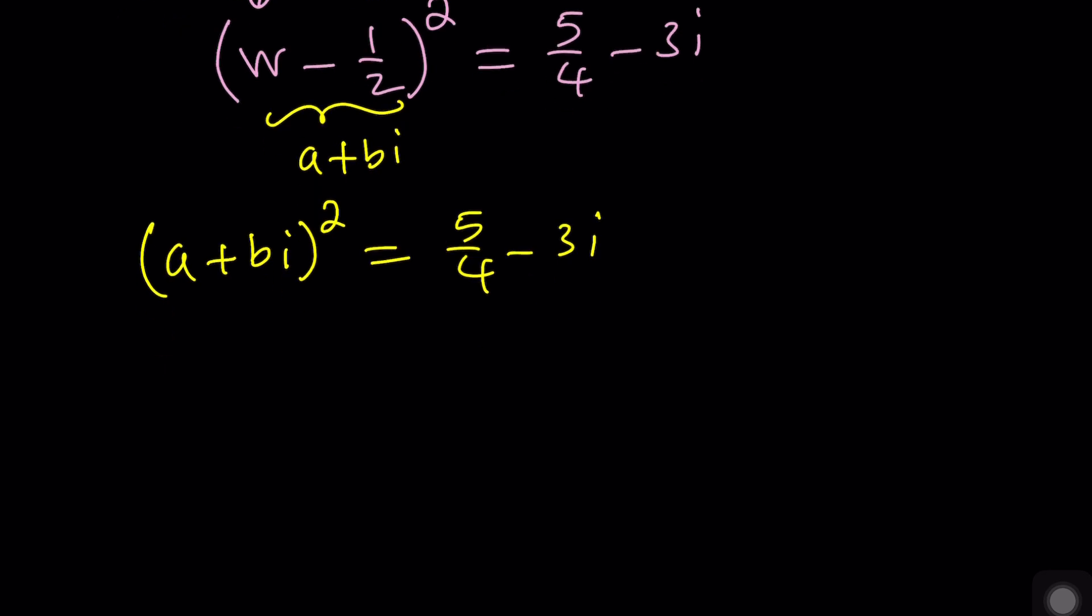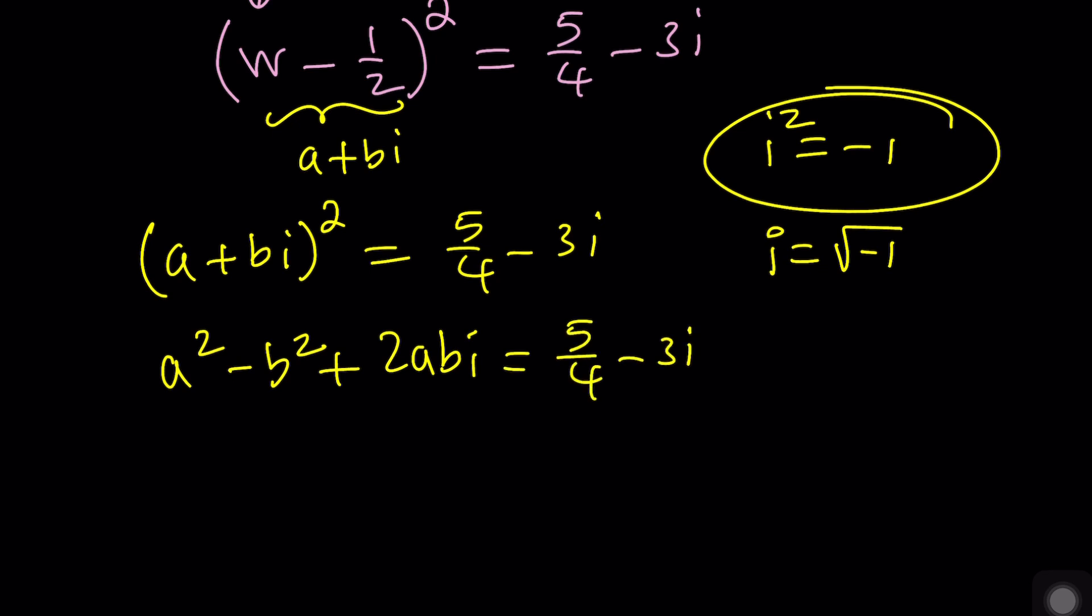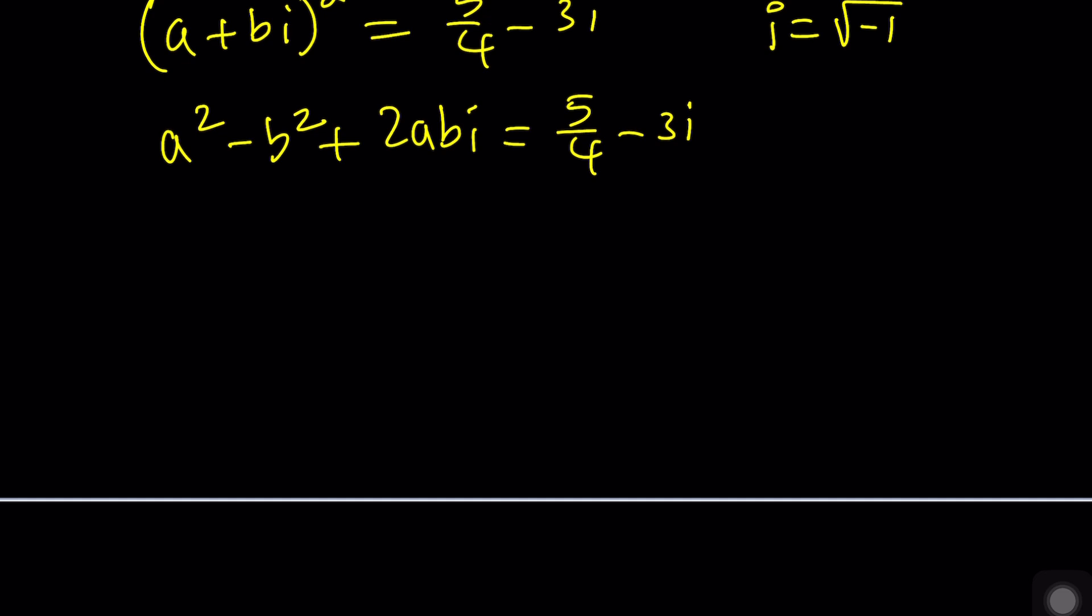Now when you square this you're going to get a squared minus b squared. Oh one thing I forgot to mention, i squared is always negative one. That's the definition for our imaginary unit. So i is also defined as the square root of negative one. Plus two a b i. That's how you square a plus b i. And then this equals five fourths minus three i. Now if two complex numbers are equal then you can say the real parts are equal and the imaginary parts are equal.